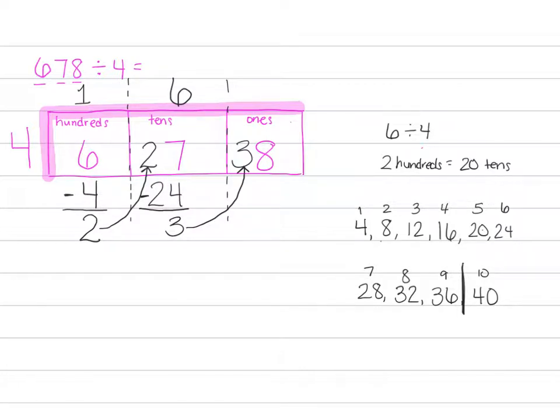So we know, all right, if we put 9 in each of the 4 groups, 9 times 4 is 36. We will use 36 ones if we put 9 in each group.